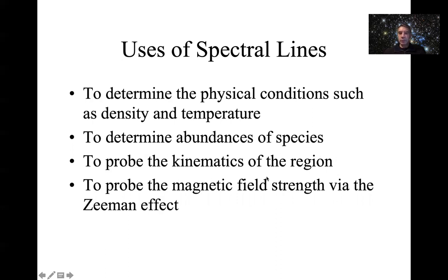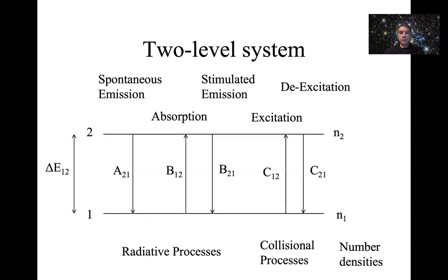Perhaps one of the most important uses of spectral lines is to diagnose the kinematics of the gas — is it moving away from us, towards us, is it rotating, is it turbulent? All those kinds of global motions of the gas can really only be probed with a spectral line; you get none of that information from continuum radiation. Towards the end I'll also indicate that we get another handle on magnetic fields through spectral lines, especially in the radio regime.